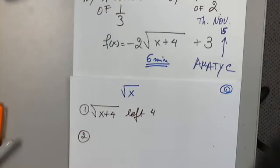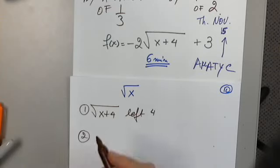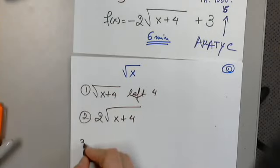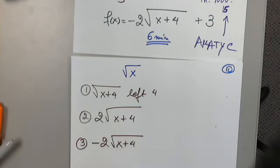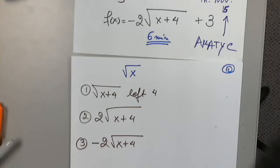Now you're going to say to multiply by negative two as the normal step. However, I have to break that into two steps because there are two transformations. The first is two times the square root of x plus four, and the third is negative two times the square root of x plus four. I prefer stretching first and then flipping, because both are exactly the same level but stretching first is a little easier. Both are acceptable.